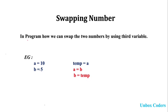First we move with using the third variable. We take the input: a is equal to 10 and b is equal to 5. We also use a third variable called temp. First I will assign the value of a to temp, so now the value of a and the temp value are the same.